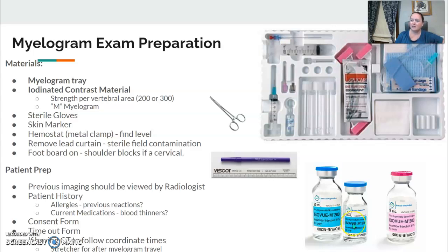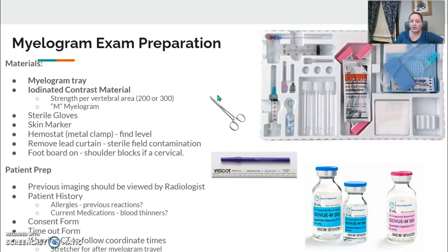The rest is similar to any special procedure: sterile gloves, remove your lead curtain, a skin marker and hemostat — that metal clamp — so they can locate the area of the spine. For patient prep, always have previous images reviewed by the radiologist, patient history, allergies, current medications, blood thinners. And of course, consent form and timeout form.